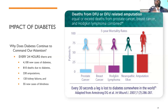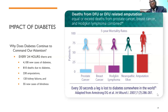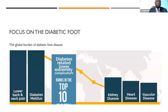When we compare diabetes to other causes of death, more people die from diabetes and amputation-related complications within five years than from breast cancer, prostate cancer, or lymphoma. Diabetic foot ulcers have a real impact on our lives.